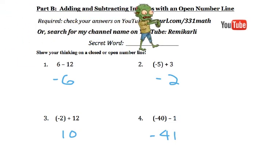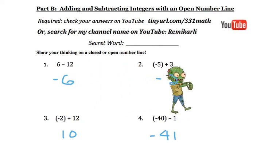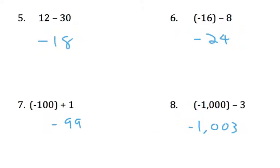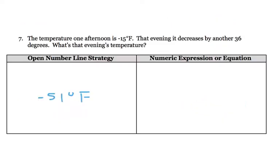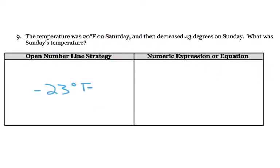Your secret word today on this part is zombie. And your answers for 1, 2, 3, and 4 are negative 6, negative 2, 10, negative 41, negative 18, negative 24, negative 99, negative 1,003, then negative 51 degrees Fahrenheit, 14 feet above sea level, and negative 23 degrees Fahrenheit. Stick around if you need to go over any of these.